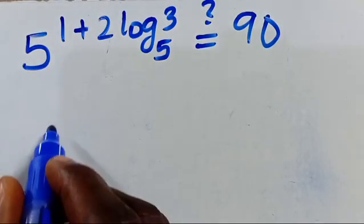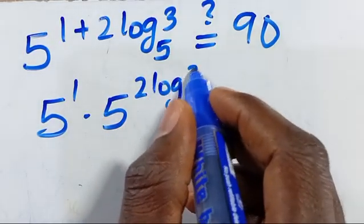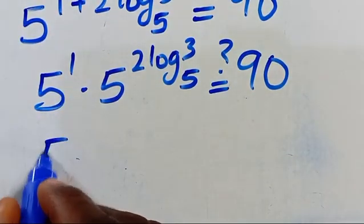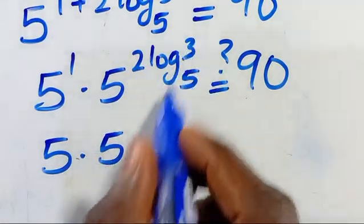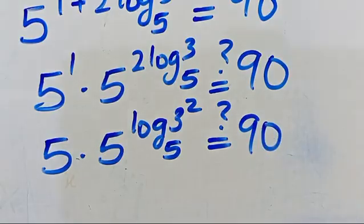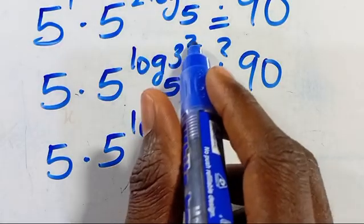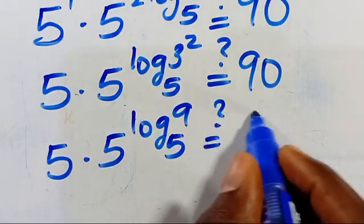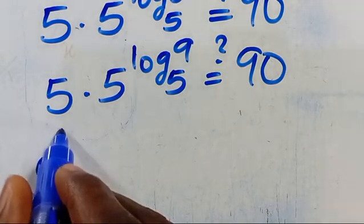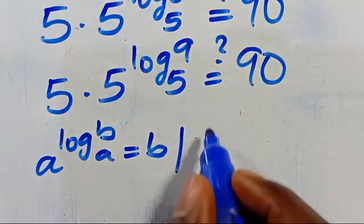We split the exponent: 2 multiplied by 5 to the power of 1, multiplied by 5 to the power of (2·log₅3). This gives 5 multiplied by 5 to the power of (2·log₅3). Now, 5 to the power of (2·log₅3) equals 5 to the power of log₅(3²), which equals 9 in base 5. We apply the identity: a to the power of log_a(b) equals b.